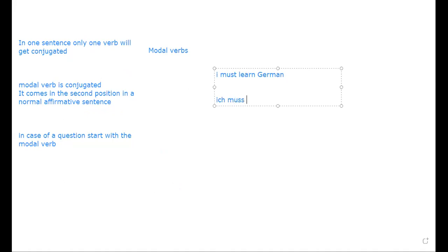Now the second verb is 'learn' — 'lernen' in German. As per this concept, only the modal verb gets conjugated. The second verb, 'lernen', will go to the end of the sentence and will not get conjugated at all. So the sentence is: 'Ich muss lernen' — I must learn.